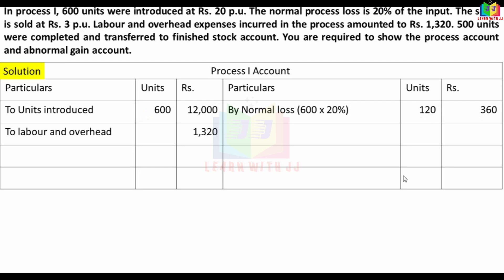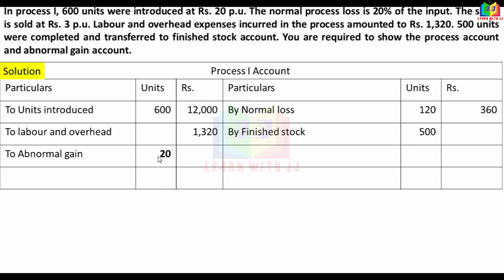The balance of units goes to finished stock: 500 units are transferred out. The debit and credit sides should balance at 600 units. Since we only have 120 normal loss + 500 finished = 620, but input is 600, the difference means 20 units is an abnormal gain, which is debited to the process account.